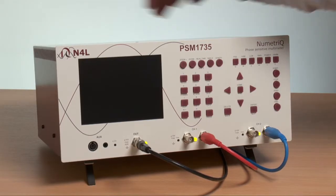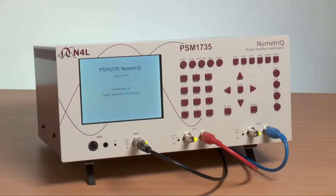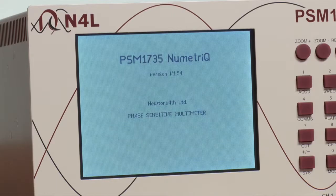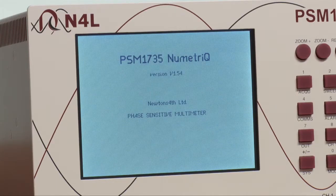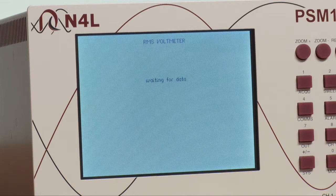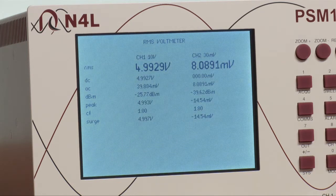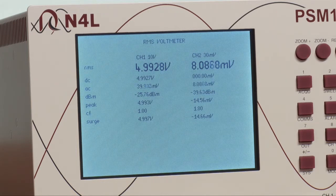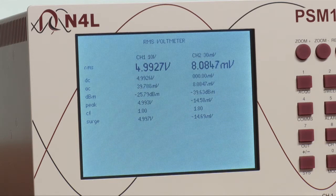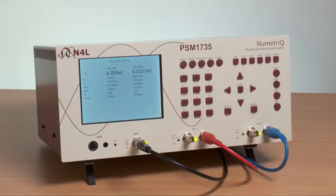If we now switch on the instrument, there will be a power-up routine. Then the default measurement screen will be presented showing RMS voltage measurements on each of the PSM 1735 measurement channels. Here you can see 4.99 volts, which is predominantly the DC voltage on one side of the injection resistor, and 8 millivolts, which is the AC component measured on the other side of the injection resistor.